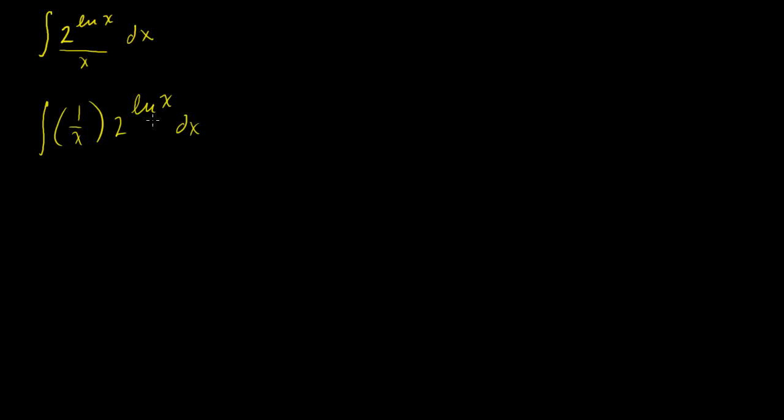And so you have an expression here, or it's kind of part of our larger function. And you have its derivative. We know that the derivative with respect to x of the natural log of x is equal to 1 over x. So we have some expression, and we have its derivative, which tells us that we can use u substitution.